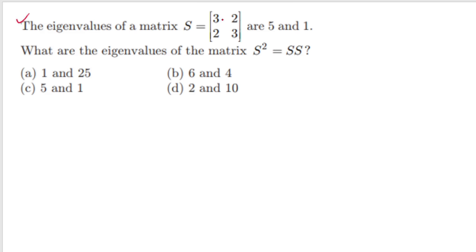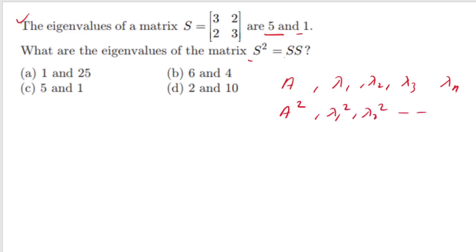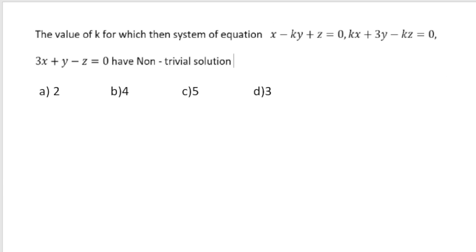The eigenvalues of matrix S are 5 and 1. What are the eigenvalues of S²? Using the property: if A has eigenvalue λ, then A² has eigenvalue λ². So eigenvalues of S² are 5²=25 and 1²=1. The correct option is 1 and 25. Remember this property — if A has eigenvalues λ₁, λ₂, ..., then Aⁿ has eigenvalues λ₁ⁿ, λ₂ⁿ, ...